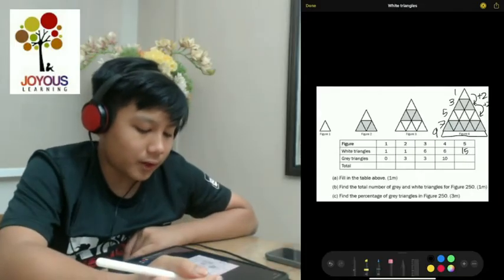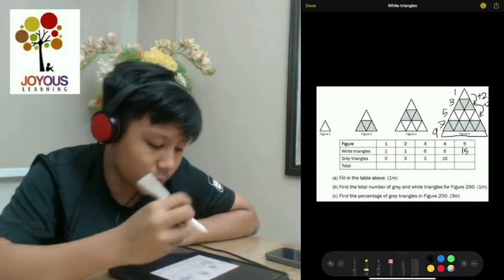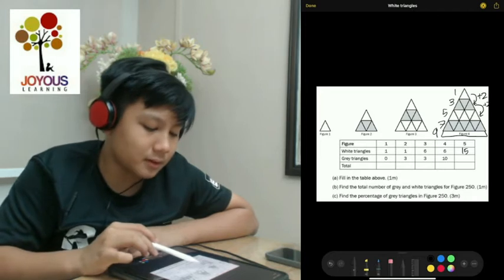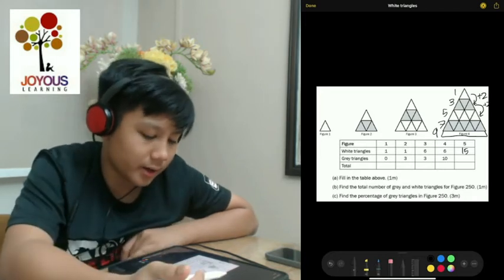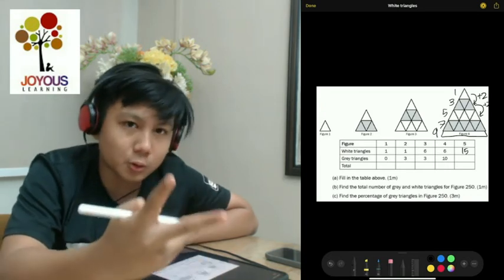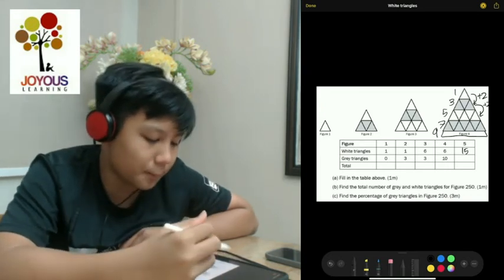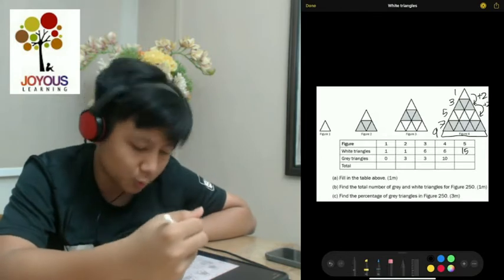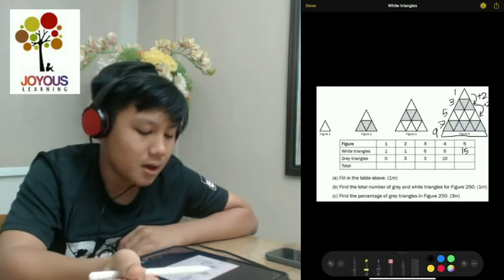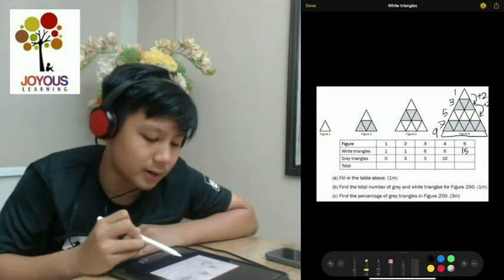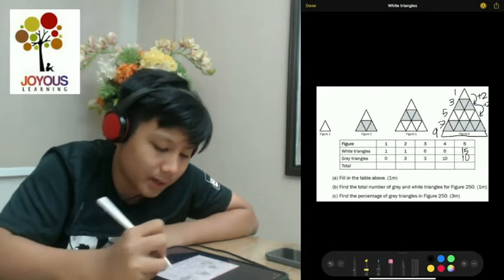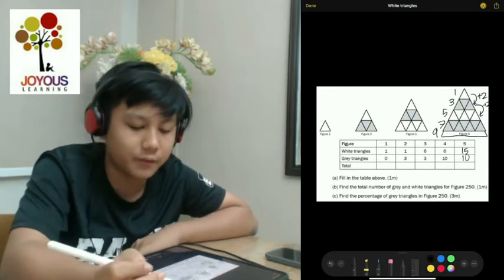Now to find out the gray triangles. As you can see for the white triangles as I said earlier, the number of white triangles doesn't change right after. It's every two then the number changes. For example, figure one is one, figure two is also one. Only in figure three it changes. But figure three and figure four is the same. So gray triangles is three, three and ten. So figure five must also be ten because the number of gray triangles does not change in figure five.